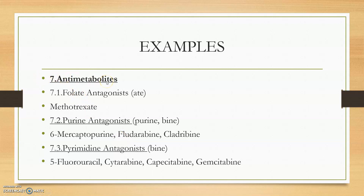Now the anti-metabolites — there are three classes. First are folate antagonists, which are folic acid mechanism inhibitors ending in '-ate' such as methotrexate. Next are the purine antagonists, ending with '-purine' and '-bine,' including 6-mercaptopurine, fludarabine, and cladribine. Third are the pyrimidine antagonists, including fluorouracil, cytarabine, capecitabine, and gemcitabine.